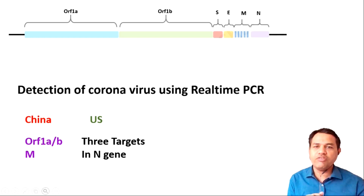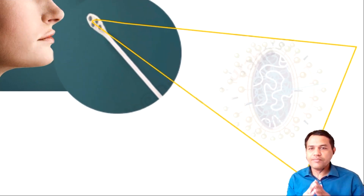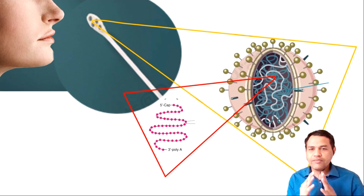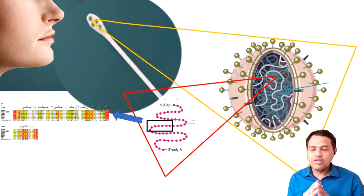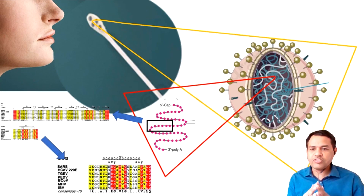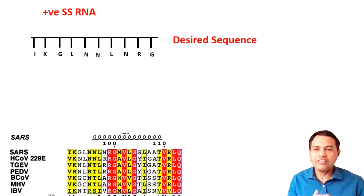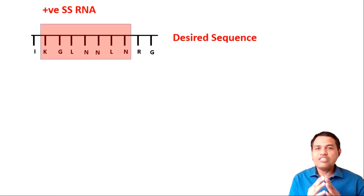Every country has its own way of finding specific sequences in the viral genome. Consider a swab sample collected from a positive patient containing the virus. The technician extracts RNA from the virus using an extraction technique. We are most interested in specific regions of this RNA responsible for coding various proteins — for example, the ORF1ab or M region. The goal is to detect whether this desired target sequence is present in the sample or not.